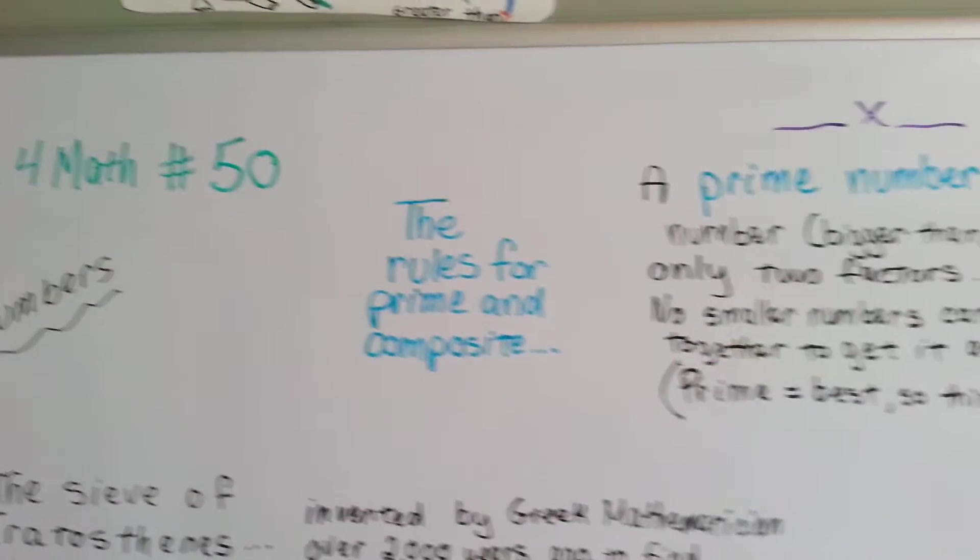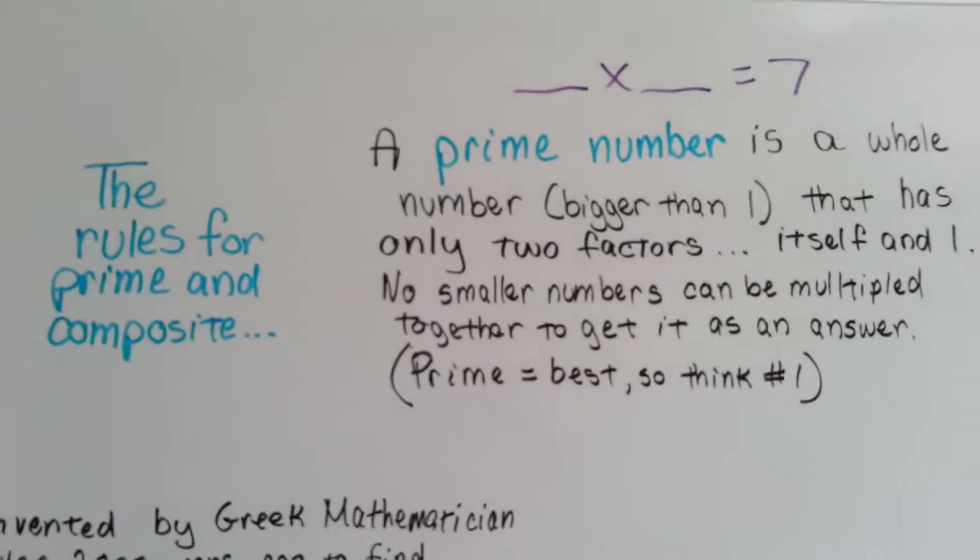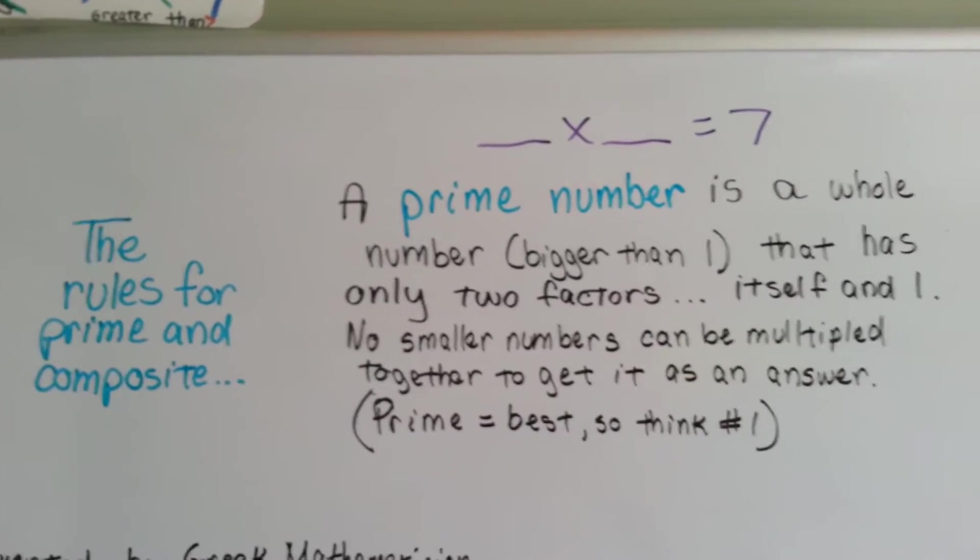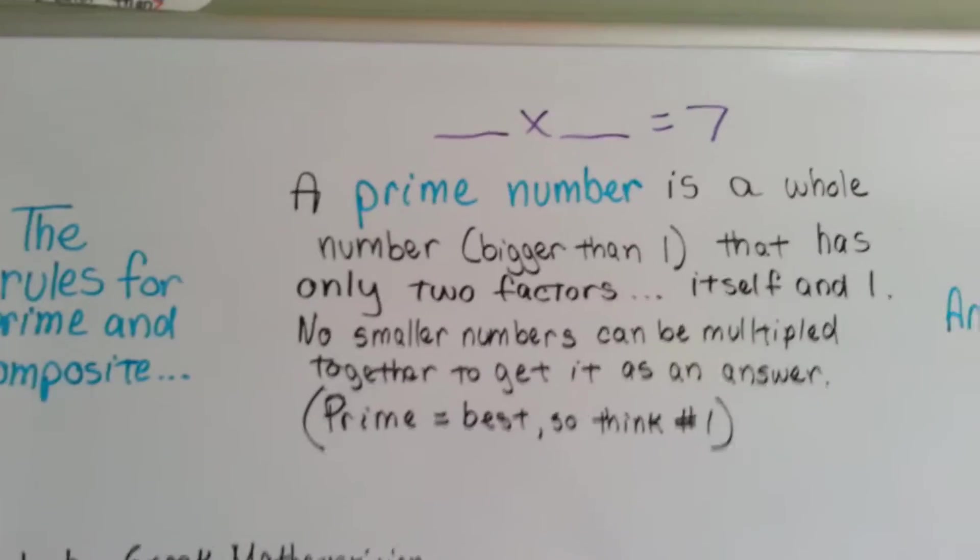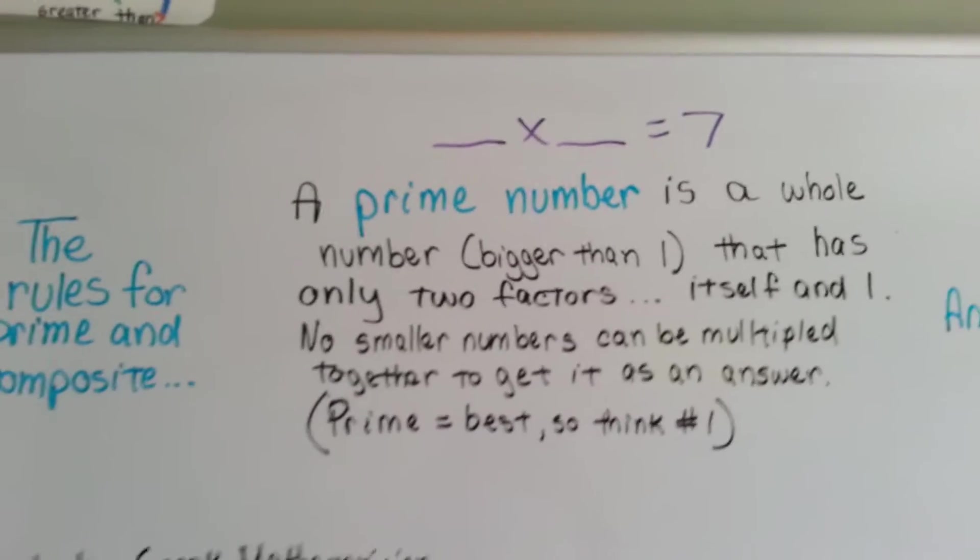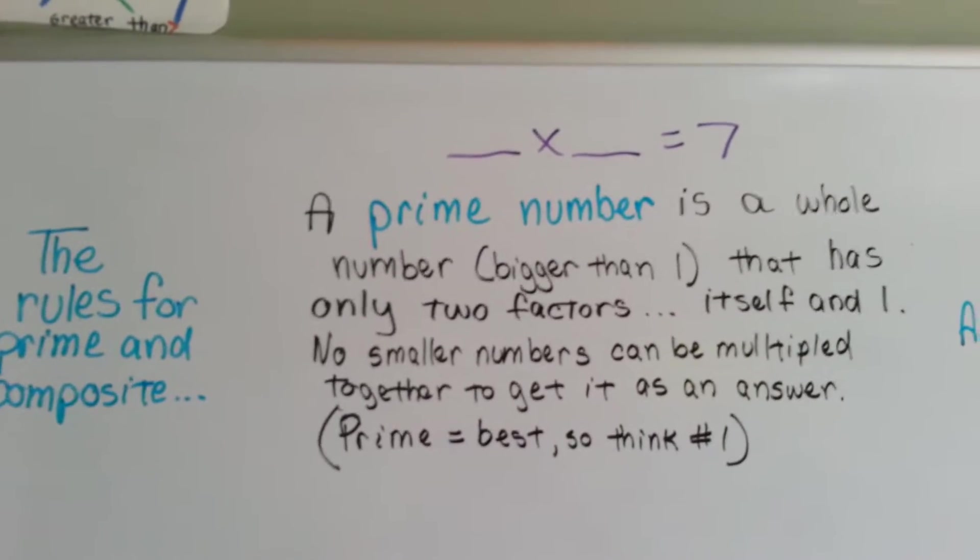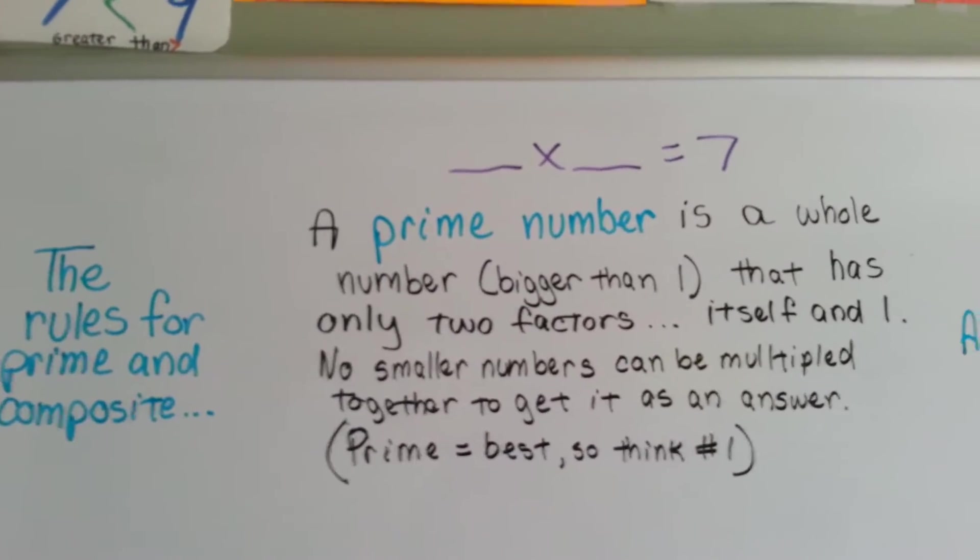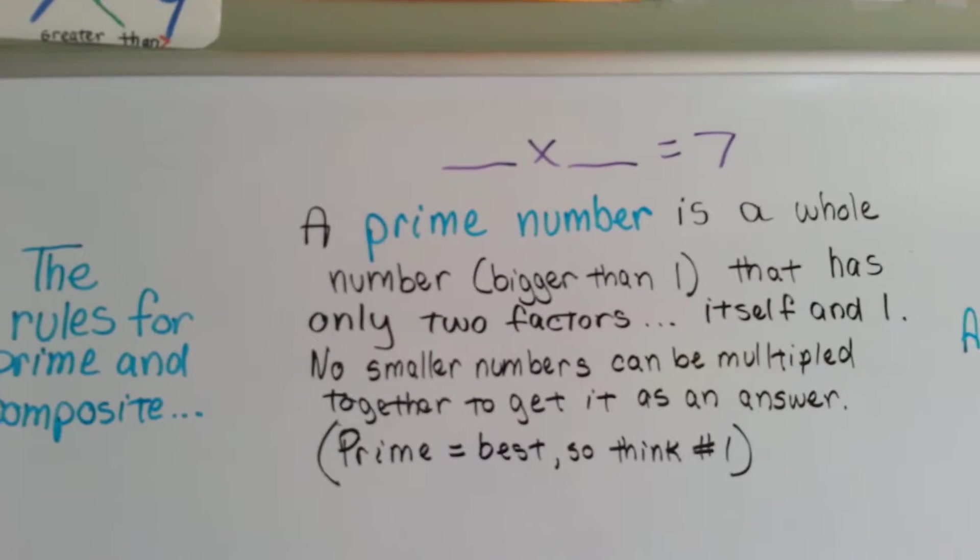What is a prime or a composite number? Here's the rules. A prime number is a whole number, bigger than one, that has only two factors: itself and one. No smaller numbers can be multiplied together to get it as an answer.